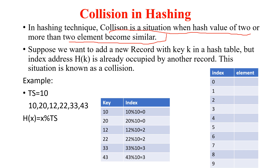So whatever function you are going to use — either division, either mid-square, either folding method — all these methods are just going to help you to calculate the index. So suppose if there are two elements getting the same index, if two or more than two elements get the same index, I will explain using the division method. I have taken some values and using those values I will calculate the index and we will see how many elements are getting the same index.